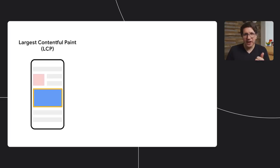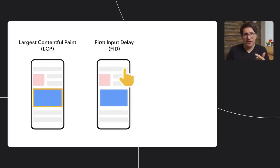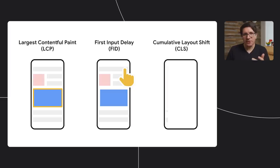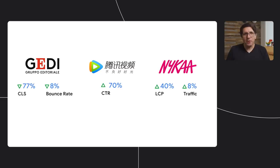We're continually updating Lighthouse guidance to give you the very best insights. Three of Lighthouse's performance metrics are particularly impactful on user experience — we call these Core Web Vitals. Collectively, they measure how fast a site displays key content, how responsive the site is for the first interaction, and how much the site's layout shifts around. Sites across the web are using Core Web Vitals as a north star for performance. For example, the Italian publisher Gedi saw an 8% improvement in bounce rate on their mobile article pages.